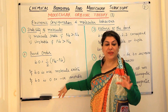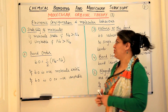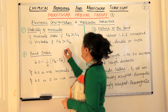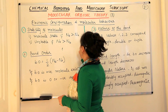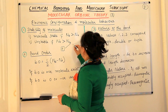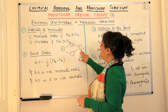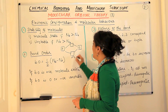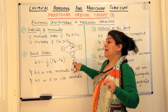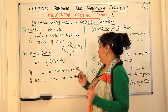Let me take simple examples of hydrogen and helium to explain these points. Hydrogen has one electron in its atom, so two hydrogen atoms together have two electrons — one in the 1s orbital of each. When they combine, they form two molecular orbitals: the bonding sigma 1s and the anti-bonding sigma* 1s. Sigma 1s is the bonding molecular orbital and sigma* 1s is the anti-bonding molecular orbital.